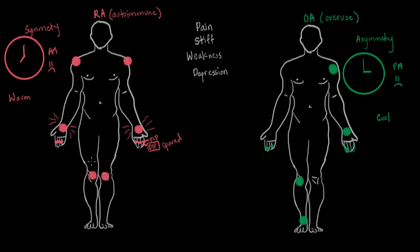Speaking of shape, RA definitely changes the shape of the joints dramatically — more of a twisting, distorted shape. In OA, it's more of an enlargement. Also on the OA side, if a patient is using the joint and you're nearby, you might hear something — we call it crepitus, which is the sound of bone grinding on bone, a sound of friction and grinding. It doesn't sound good coming from a joint, but it's more specific to osteoarthritis than rheumatoid.